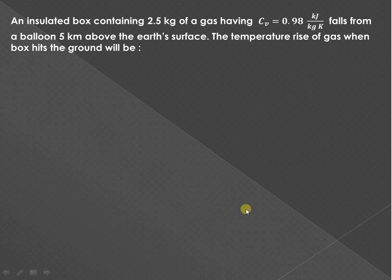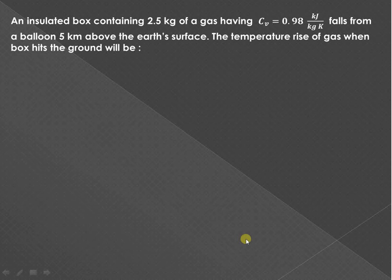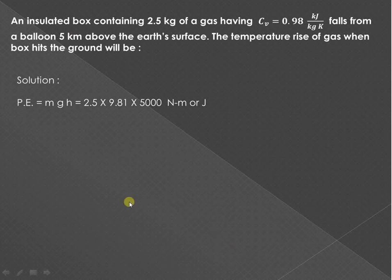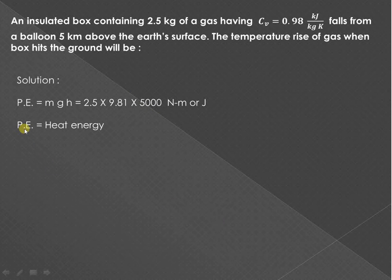In the next example, an insulated box contains 2.5 kg of gas with specific heat at constant volume cv = 0.98 kJ/kgK. It falls from a balloon at a height of 5 km above the earth's surface. By virtue of its height, the energy contained is potential energy: PE = mgh = 2.5 × 9.81 × 5000 J. When the box hits the ground, all potential energy converts to heat energy by conservation of energy.